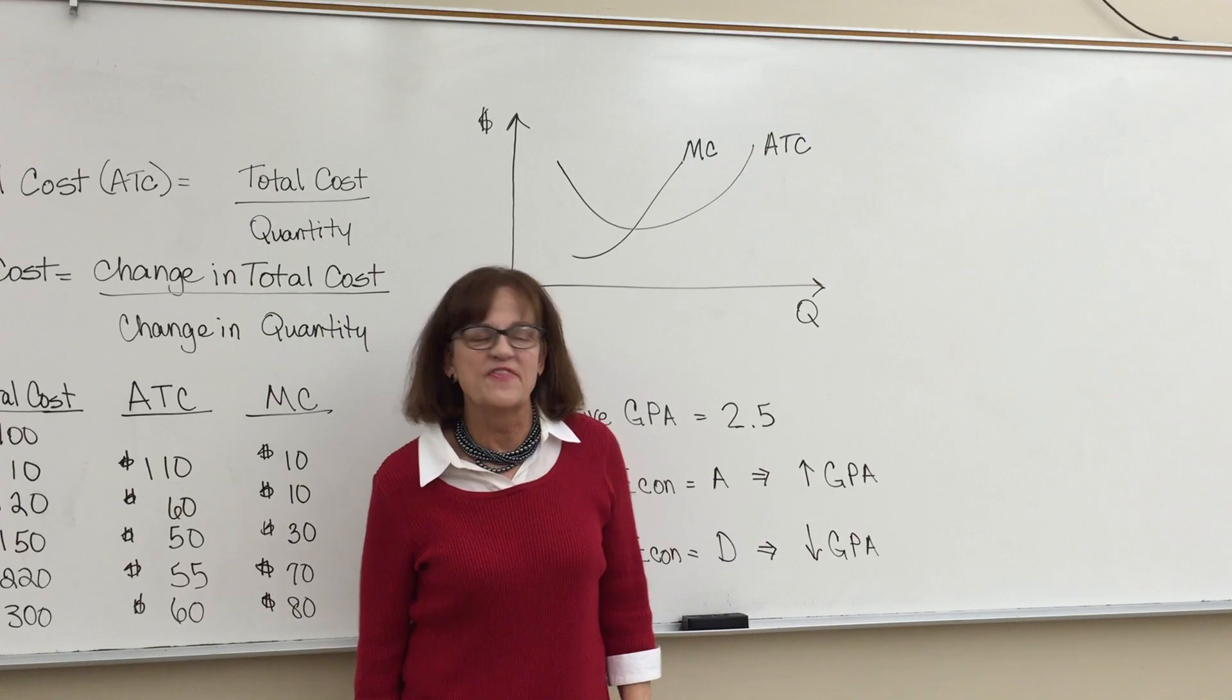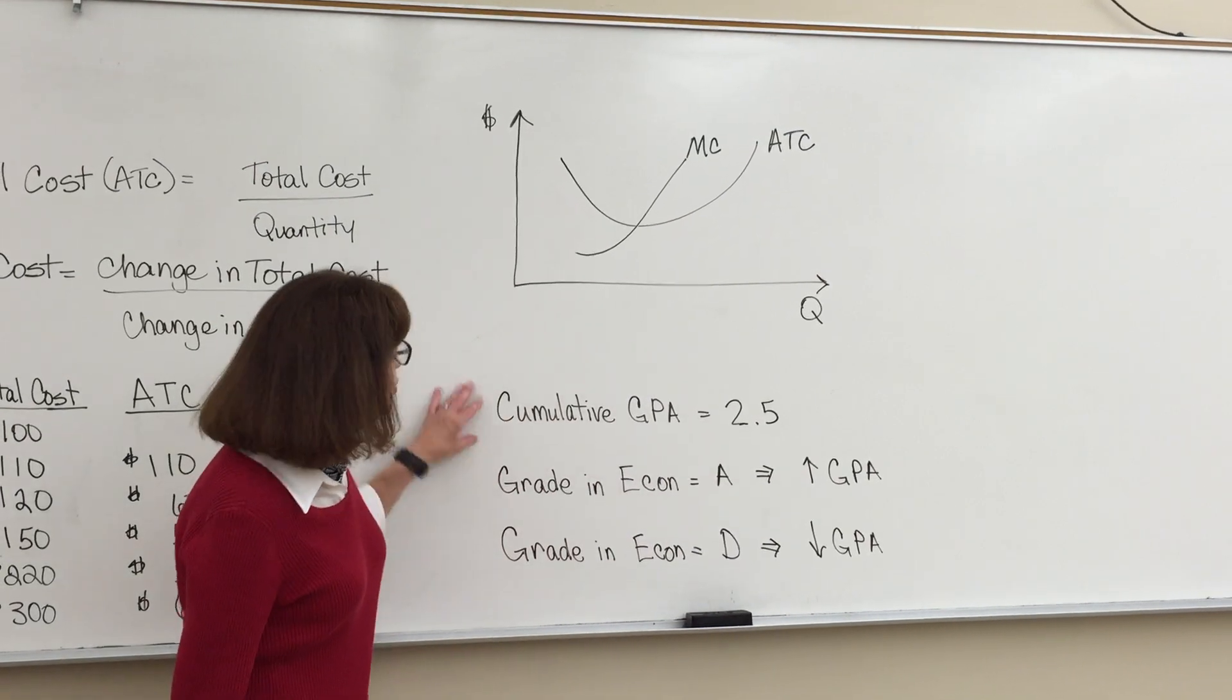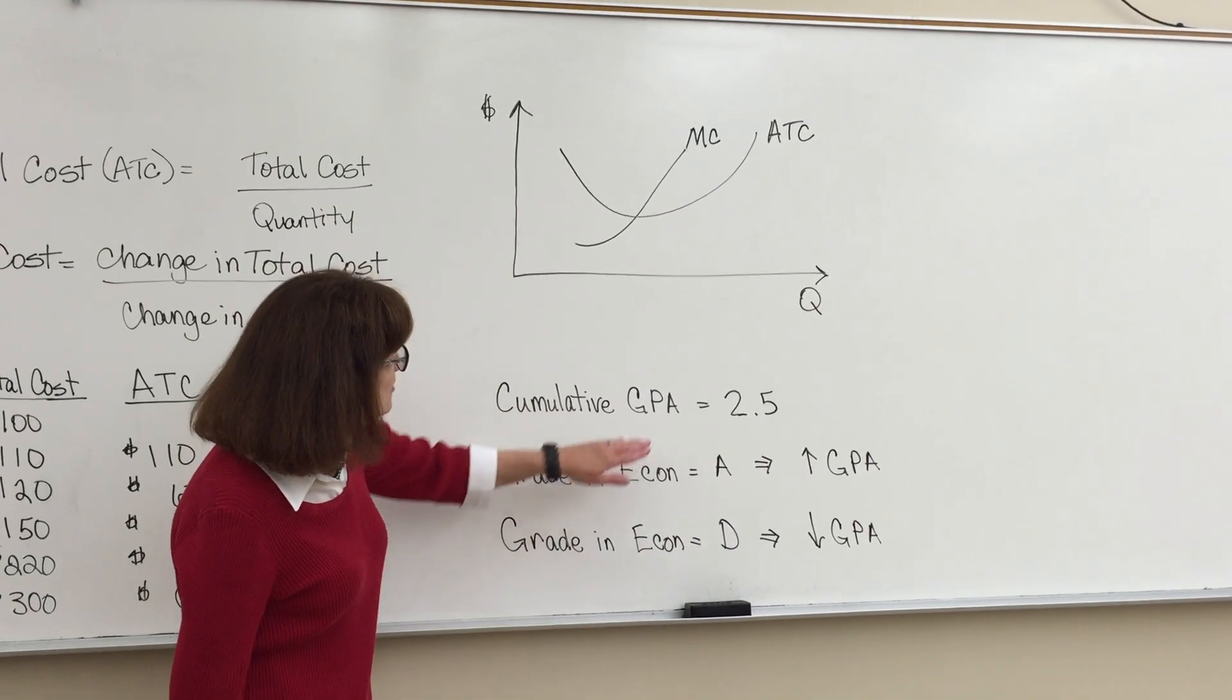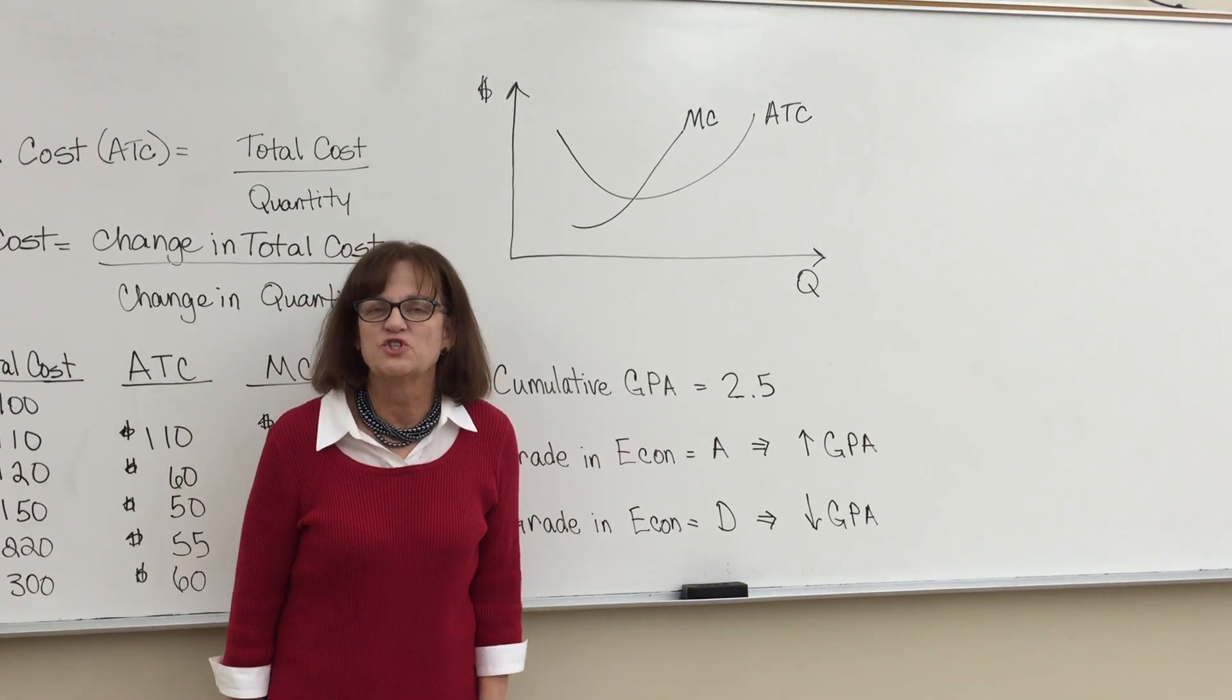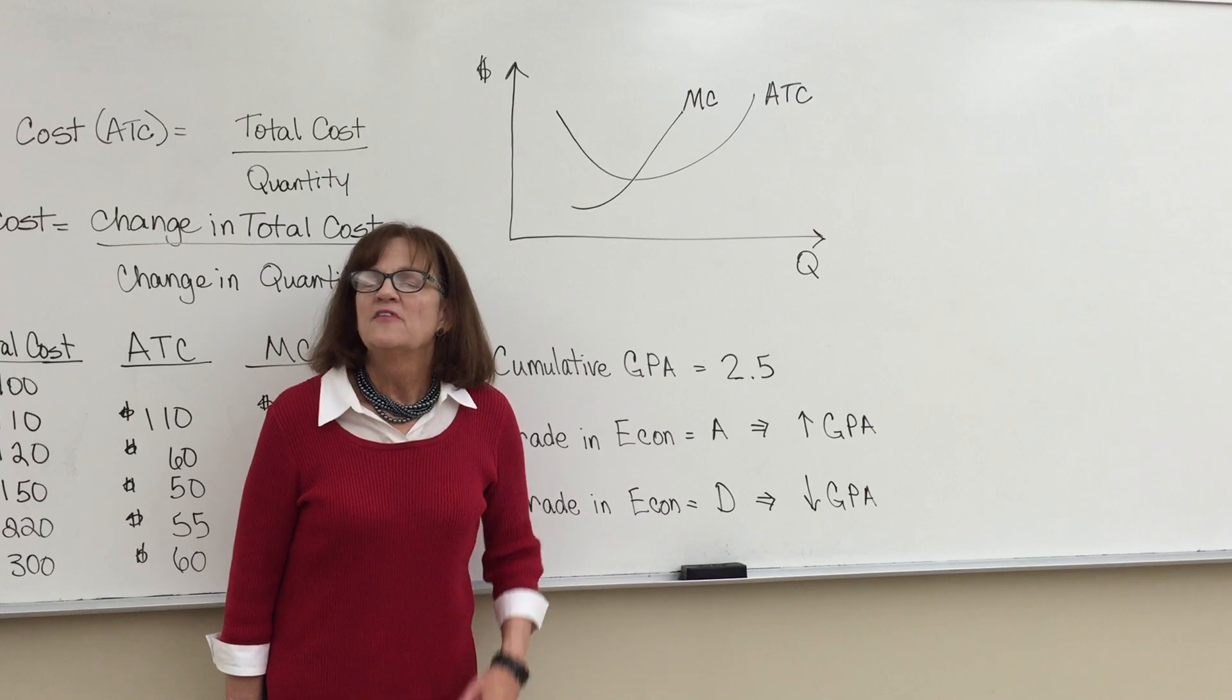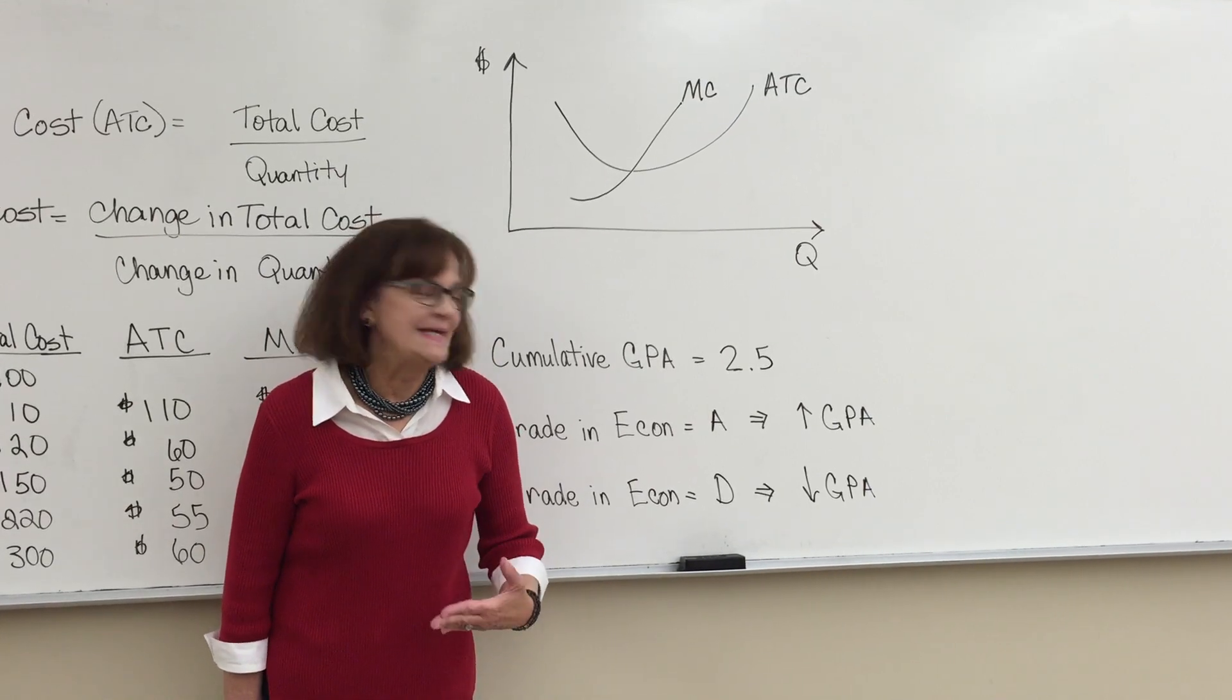An easy way to understand this is to think about your GPA. Suppose you have a GPA of 2.5. That's your grade point average. Think of that as the average total cost. What changes your GPA? The grade in the course you are taking now.